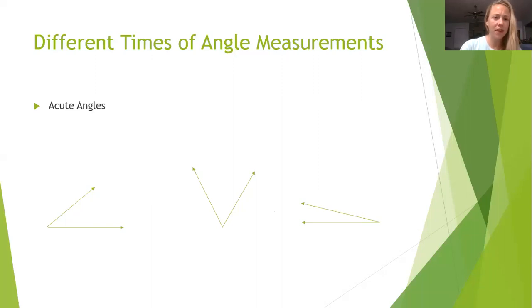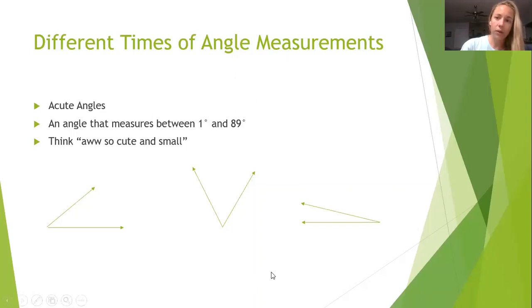The next type of angle that we're going to go over is an acute angle. An acute angle has a measurement between 1 degree and 89 degrees, so that means that it is less than a right angle. So here are three different acute angles that you can see and they're all less than that right angle. They're all smaller.